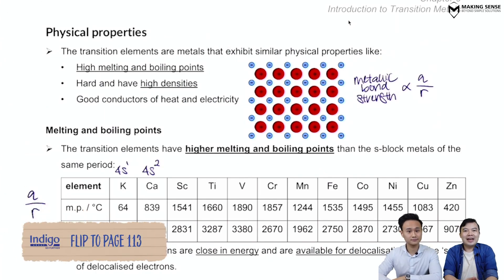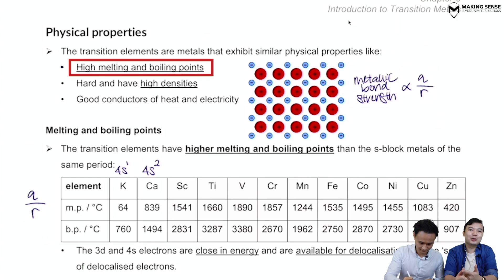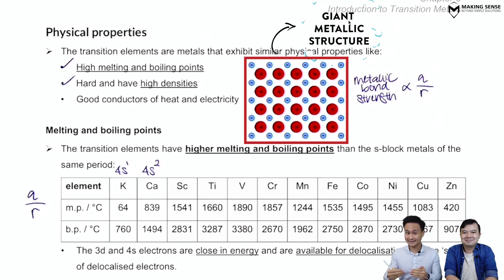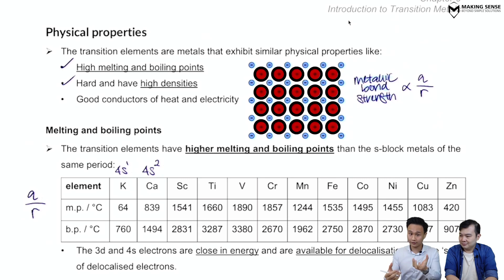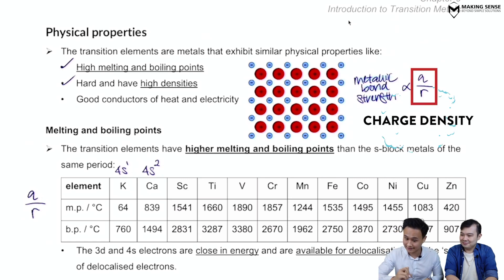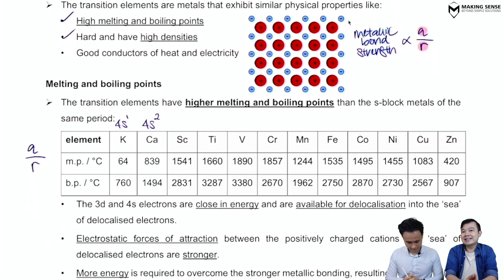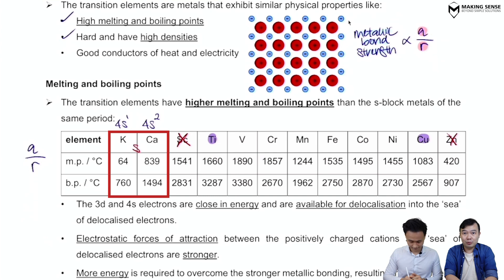Moving on to physical properties — comparing transition metals against s-block elements. There are two physical properties to focus on: melting point and density. To understand melting point, you first need to understand the structure of a metal: a giant metallic lattice of positively charged cations surrounded by a sea of delocalized electrons. The metallic bond strength depends on the electrostatic attraction between the cation and the sea of delocalized electrons, which is proportional to charge density — that is, the charge of the cation over the radius of the cation.